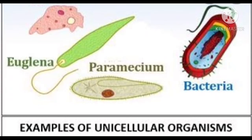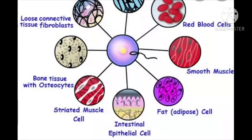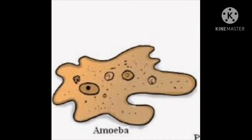A single-celled organism performs all the necessary functions that multicellular organisms perform. Multicellular organisms are organisms made of more than one cell. The number of cells being less in smaller organisms does not affect the functioning of the organisms. A single-celled organism like amoeba captures and digests food, respires, excretes, grows and reproduces. Similar functions in multicellular organisms are carried out by groups of specialized cells forming different tissues, and tissues in turn form organs.